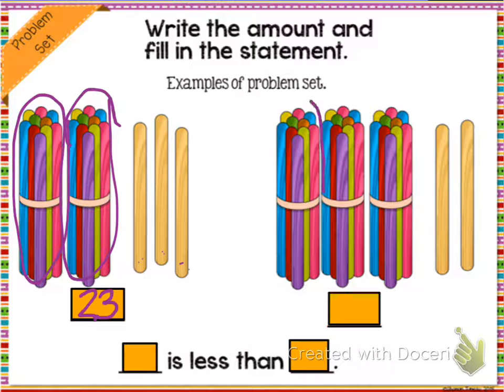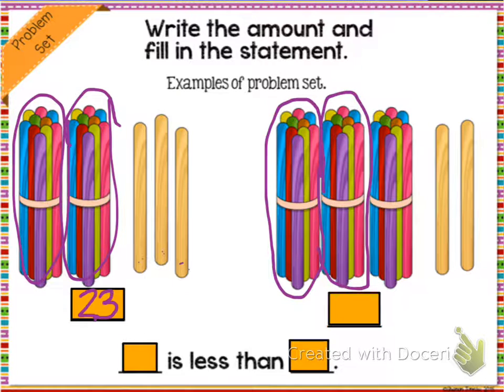Now in this picture, I have 1, 2, and 3 tens. And I have 1, 2 ones. So this number is 10, 20, 30, 31, 32.